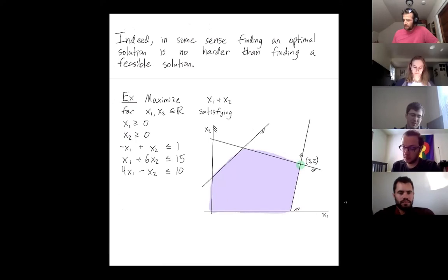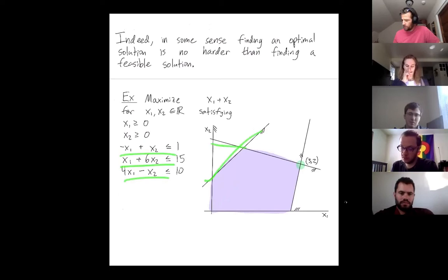So pretend we're trying to maximize x1 plus x2. So we're trying to move as far as we can to the northeast. But our variables x1 and x2 have to satisfy these following constraints. They're non-negative. And we have three more constraints, given these three half spaces, which carve out our feasible region.